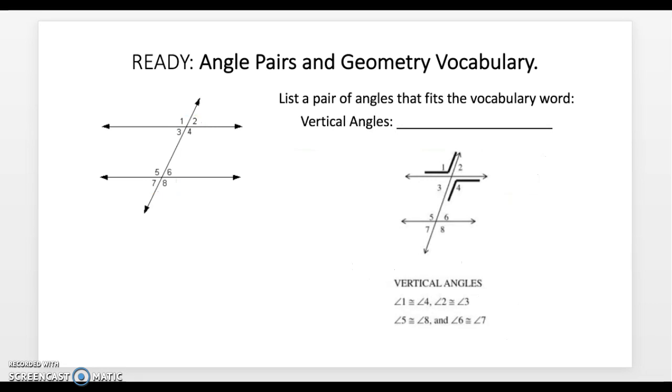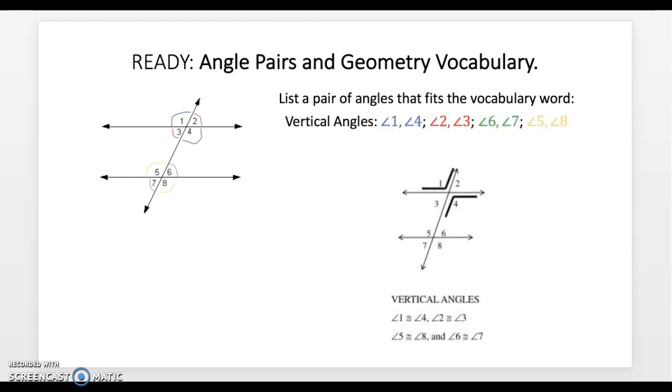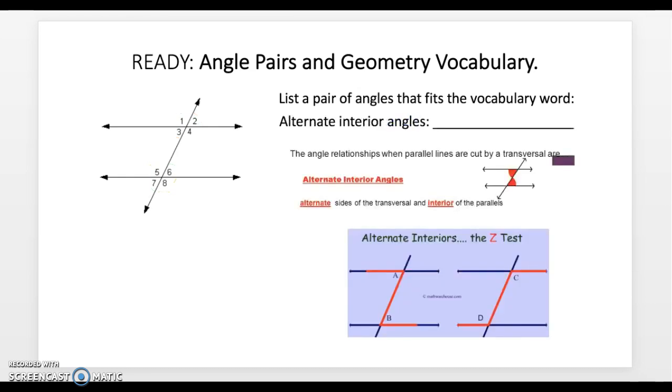Then for vertical angles, these are angles that are across from each other in the parallel lines cut by the transversal. So we have 1 and 4, 2 and 3, 6 and 7, and 5 and 8, just like you see in the example below.